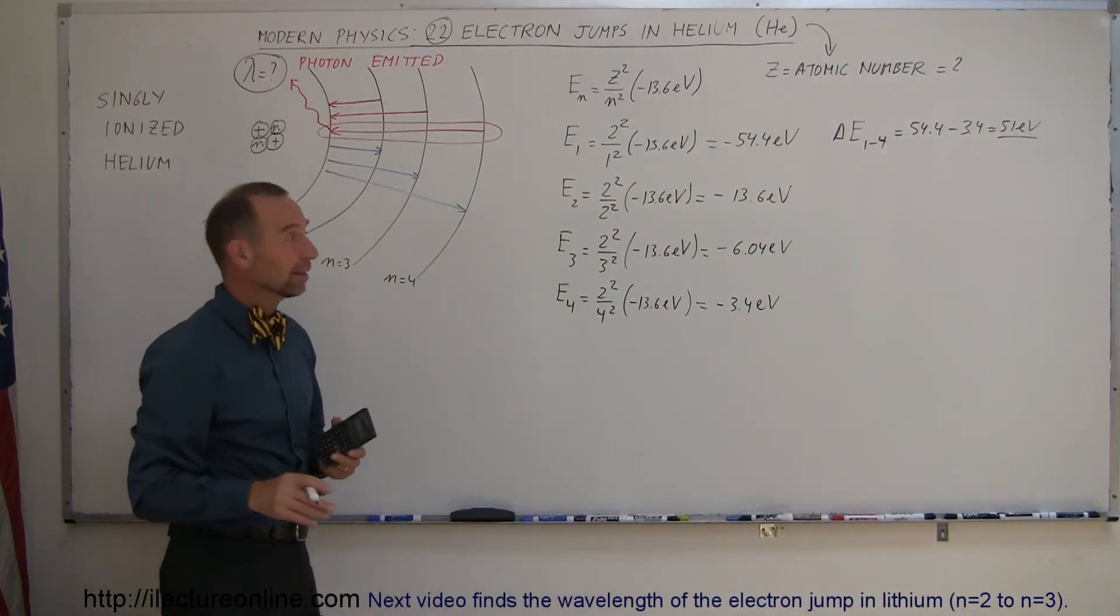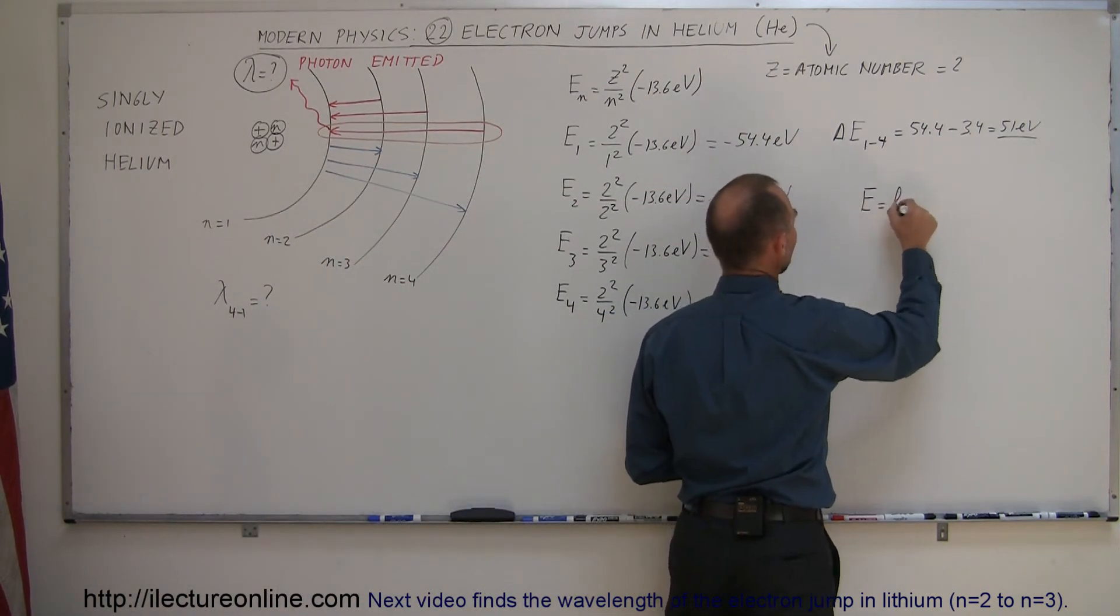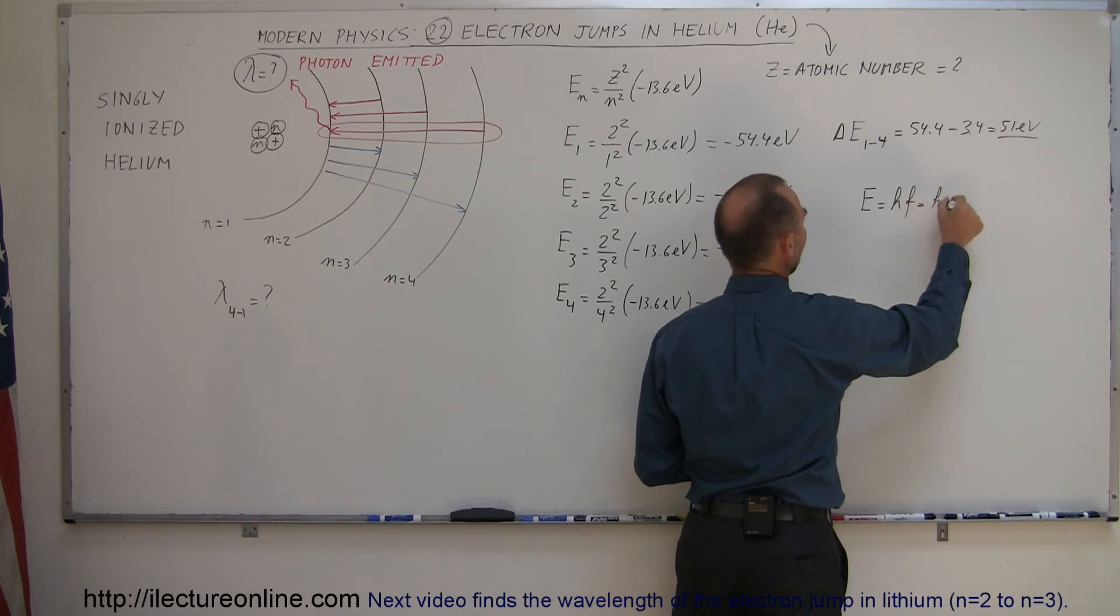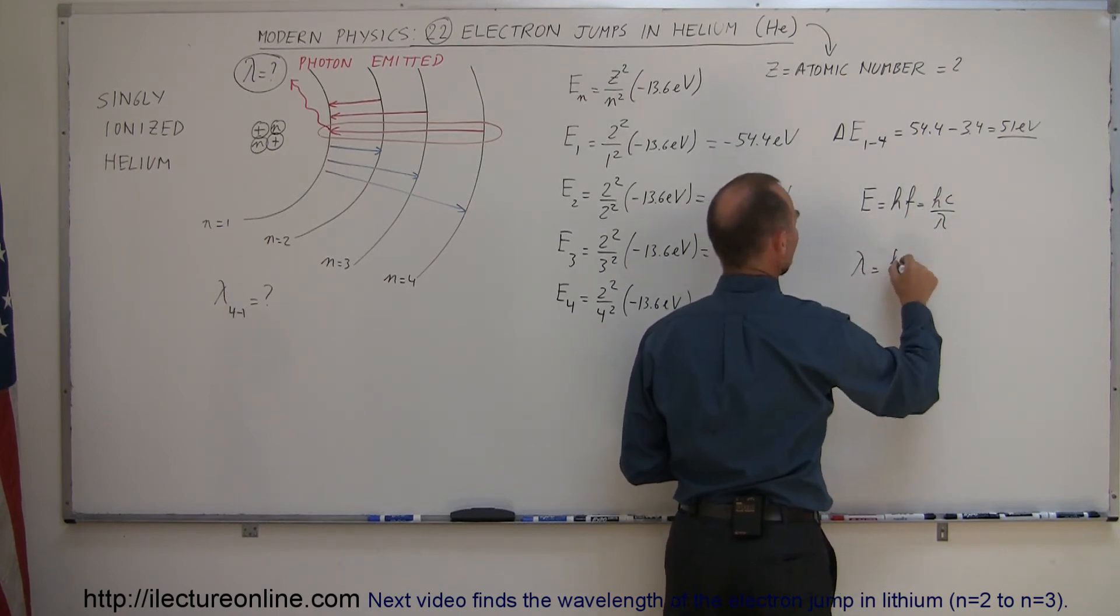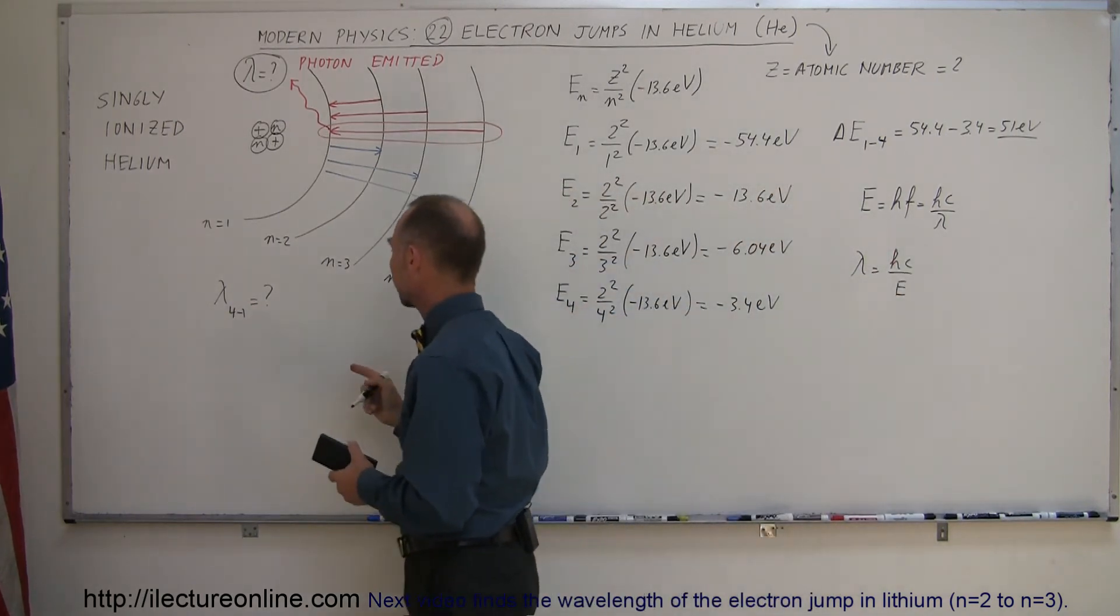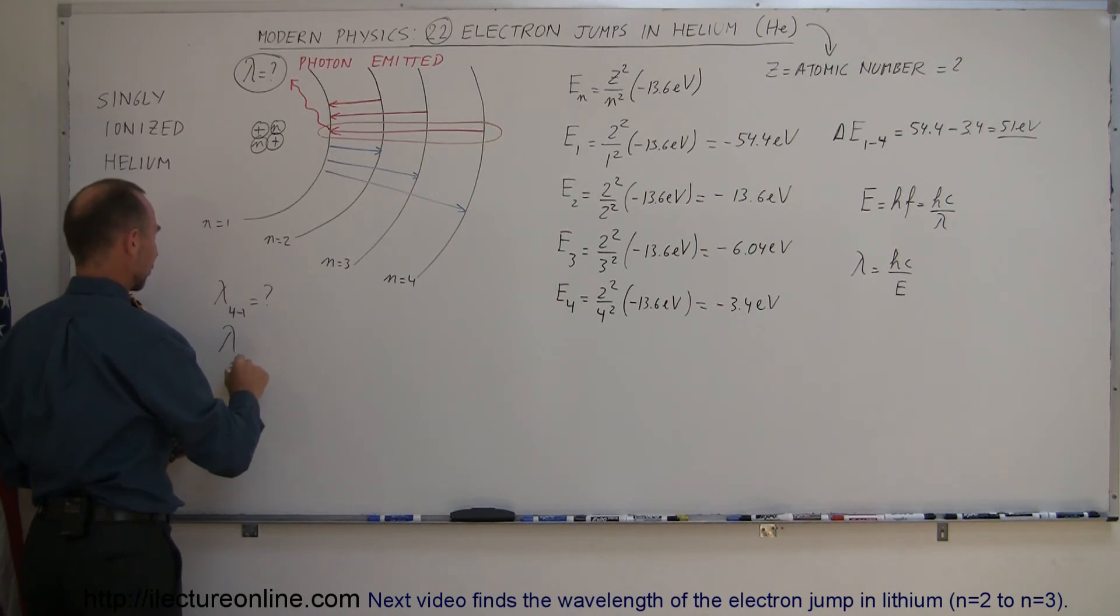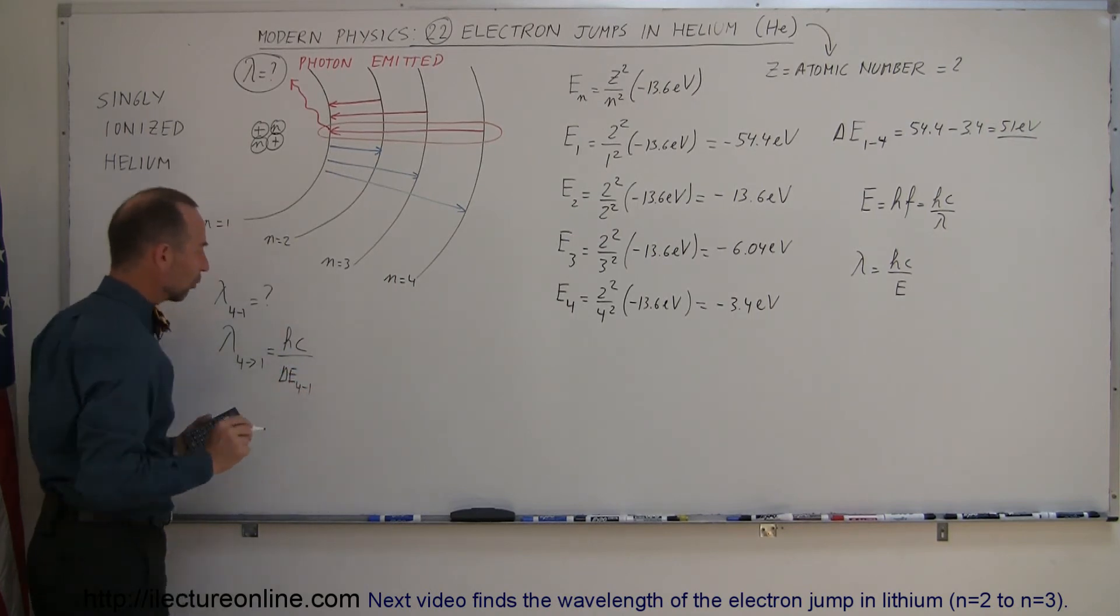Now we go ahead and find the wavelength, and of course we find that by using the equation. The energy of a photon is equal to H times F, which is equal to H times C divided by lambda. So therefore, lambda is equal to HC divided by the energy difference. So lambda for 4-to-1 jump is equal to HC divided by the delta energy for the difference between those two levels.